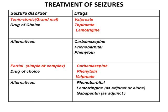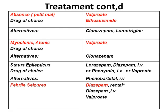For absence seizures, also known as petit mal seizures, the drug of choice is ethosuximide. Valproic acid can also be employed, especially since it can be used for multiple seizure types by virtue of its capability of blocking low voltage-gated calcium channels. For myoclonic and atonic seizures, valproic acid is the drug of choice.